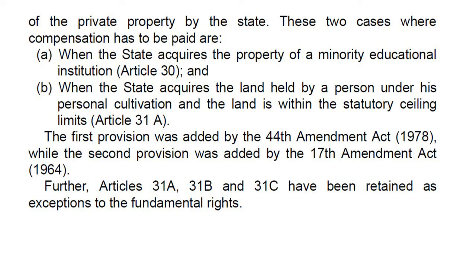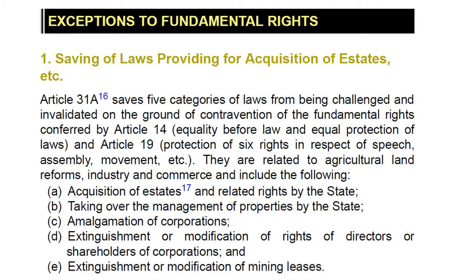Articles 31a, 31b and 31c have been retained as exceptions to the fundamental rights. Article 31a saves five categories of laws from being challenged on grounds of contravention of Articles 14 and 19. These are related to agricultural land reforms, industry and commerce, and include: (a) acquisition of estates and related rights by the State, (b) taking over management of properties by the State, (c) amalgamation of corporations, (d) extinguishment or modification of rights of directors or shareholders of corporations, and (e) extinguishment or modification of mining leases.